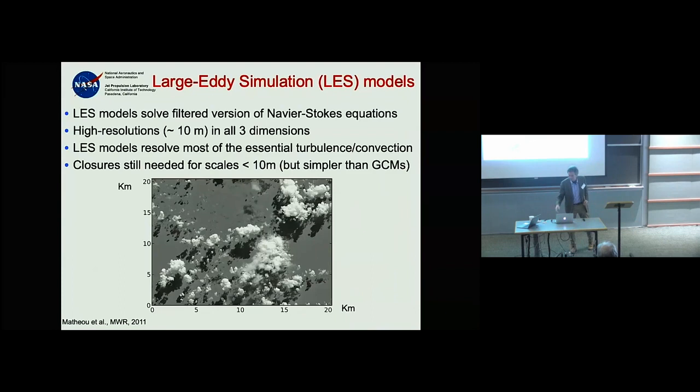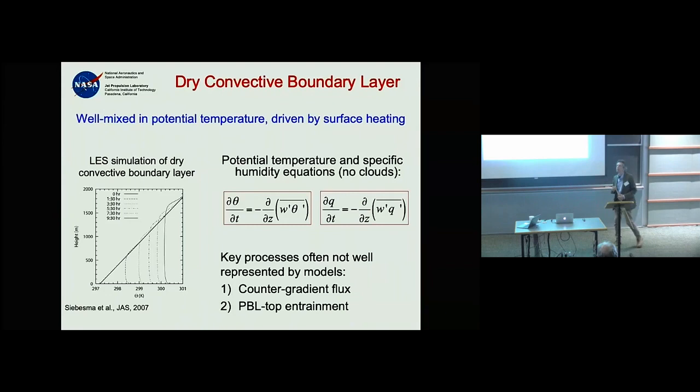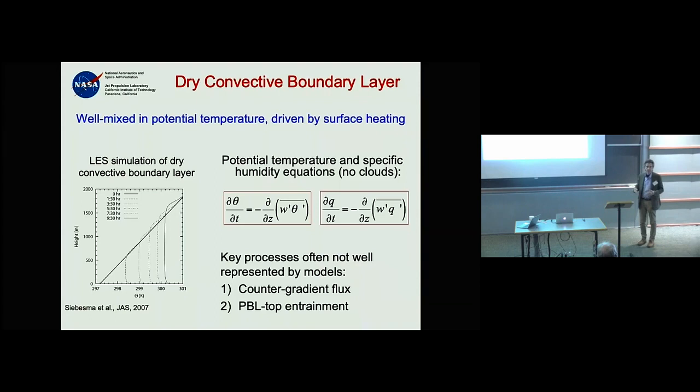Let's start with the simplest case: a dry convective boundary layer — forget clouds and phase transitions for the moment. Imagine you're over the desert in summer, the sun is shining, the surface is warm, and you have eddies transporting energy upward.